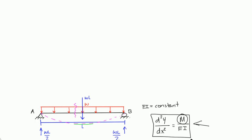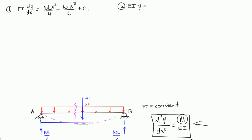Let me rewrite both equations. Equation 1: EI dy/dx is equal to WLx squared over 4 minus Wx cubed over 6 plus C1. Equation 2: EI times Y is equal to WLx cubed over 12 minus Wx to the 4th over 24 plus C1x plus C2.